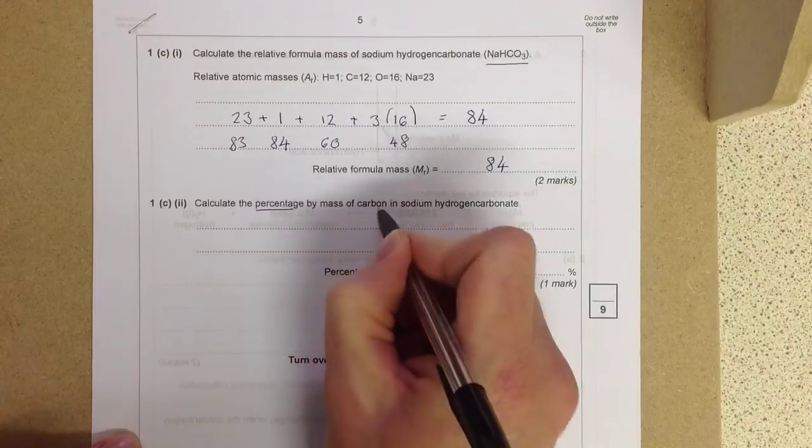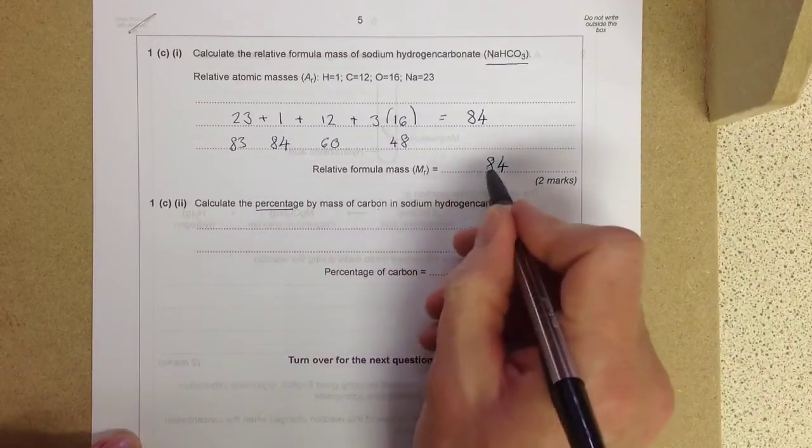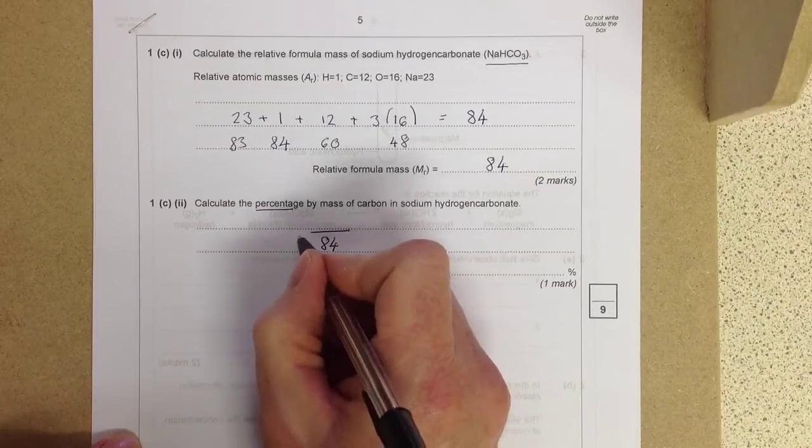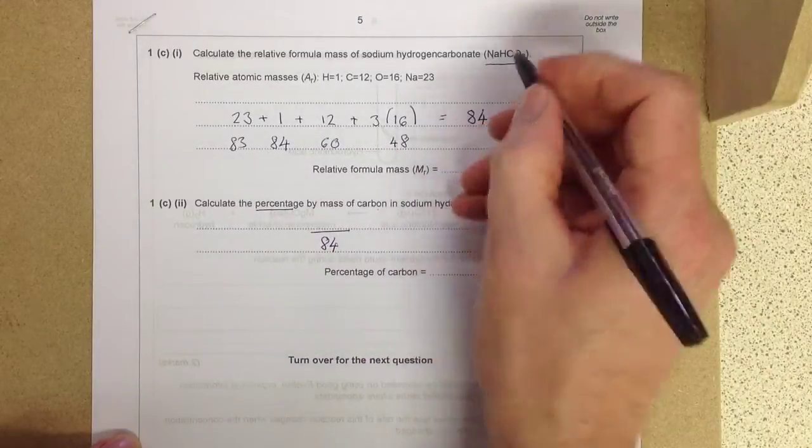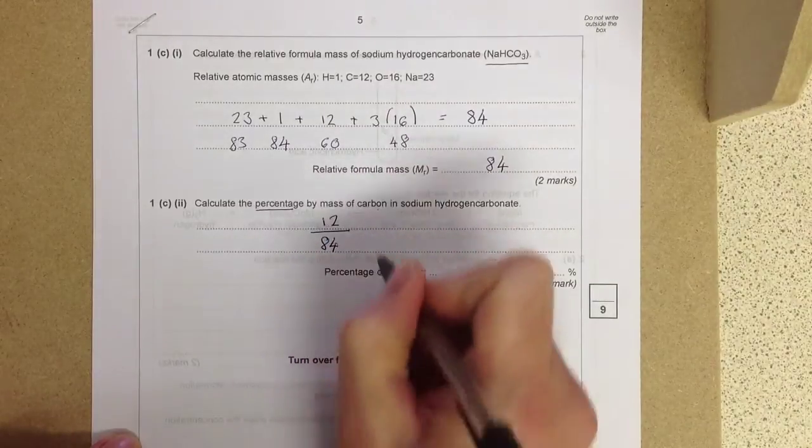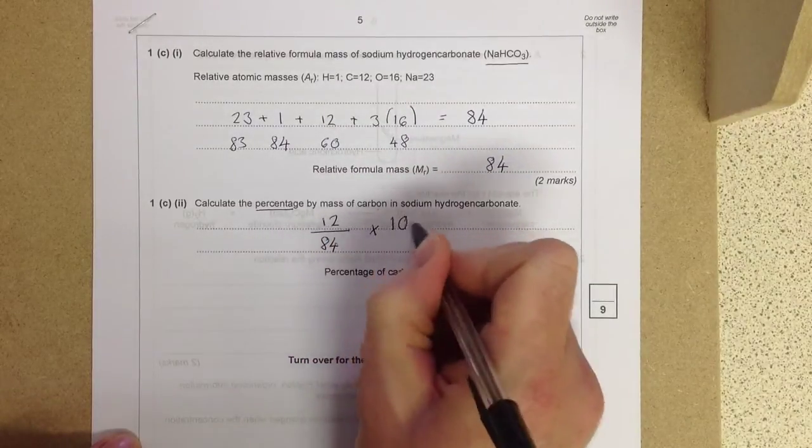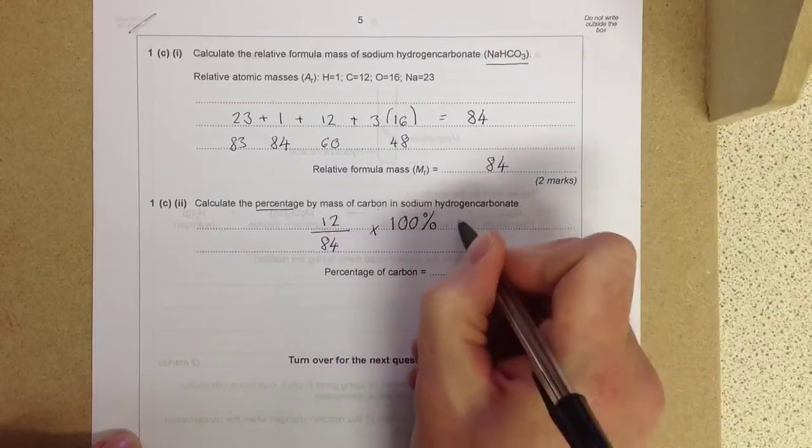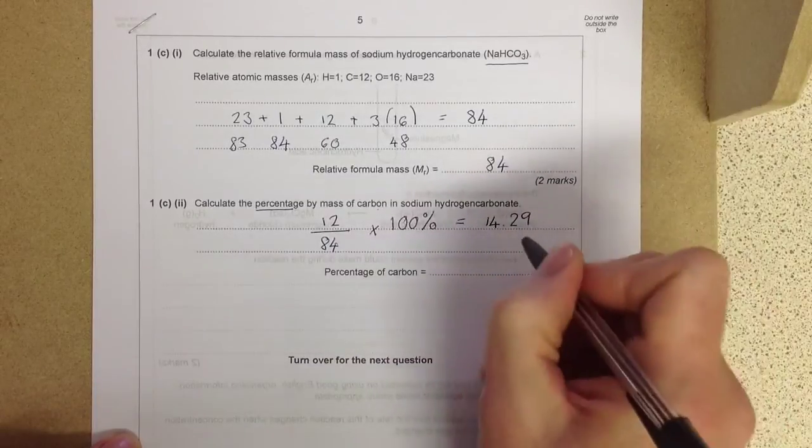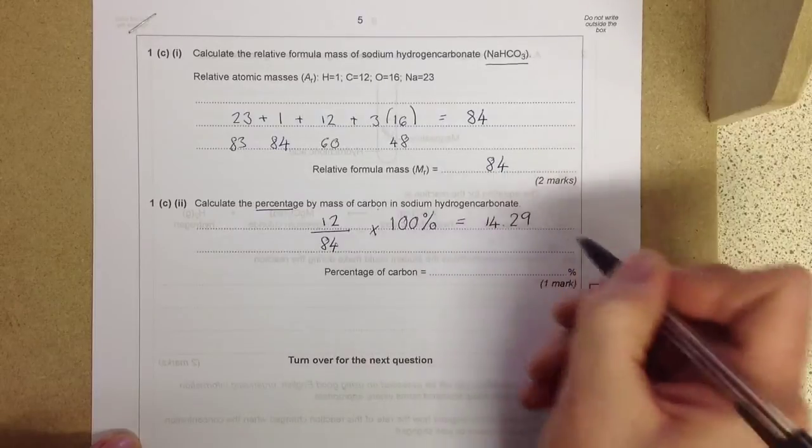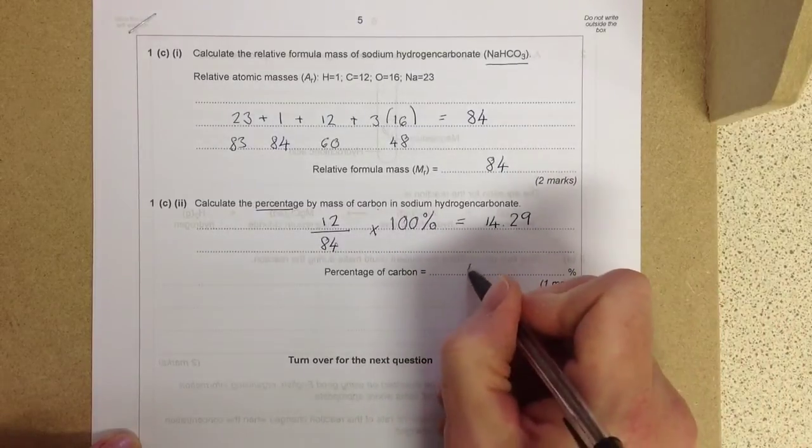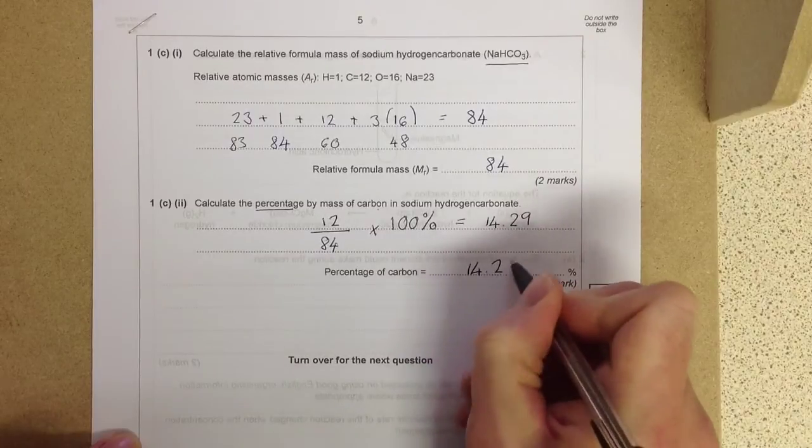Calculate the percentage mass of carbon in sodium hydrogen carbonate. Well, the full mass is 84. How much of this is actually carbon? We've only got one atom of carbon in it. The mass of one atom being 12. So 12 divided by 84, multiply that by 100 to change it into percentage. And you get an answer of 14.29. Right, this is important. Just leave it at two decimal places. You can round up to maybe one decimal place, but please don't round up to 14. 14.29.